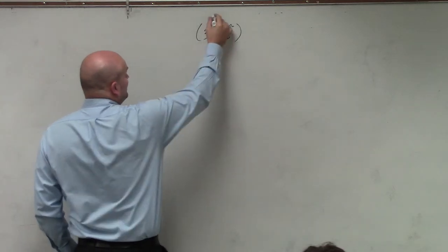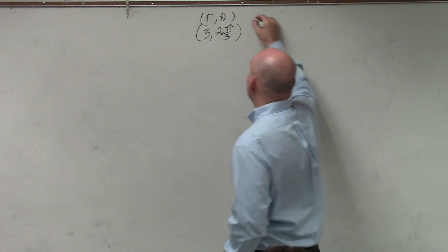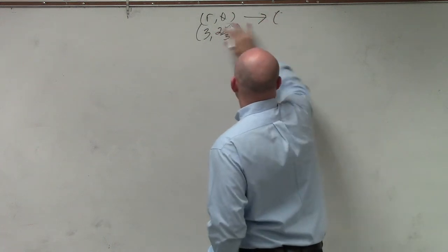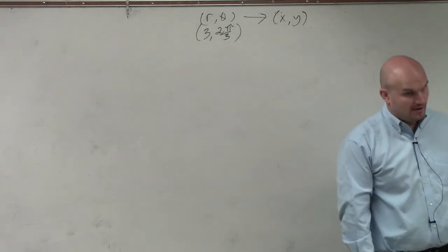So if you remember our conversion, here is rectangular form, r comma theta. We want to write this in, I'm sorry, that's polar form. We want to write this in rectangular form, correct?